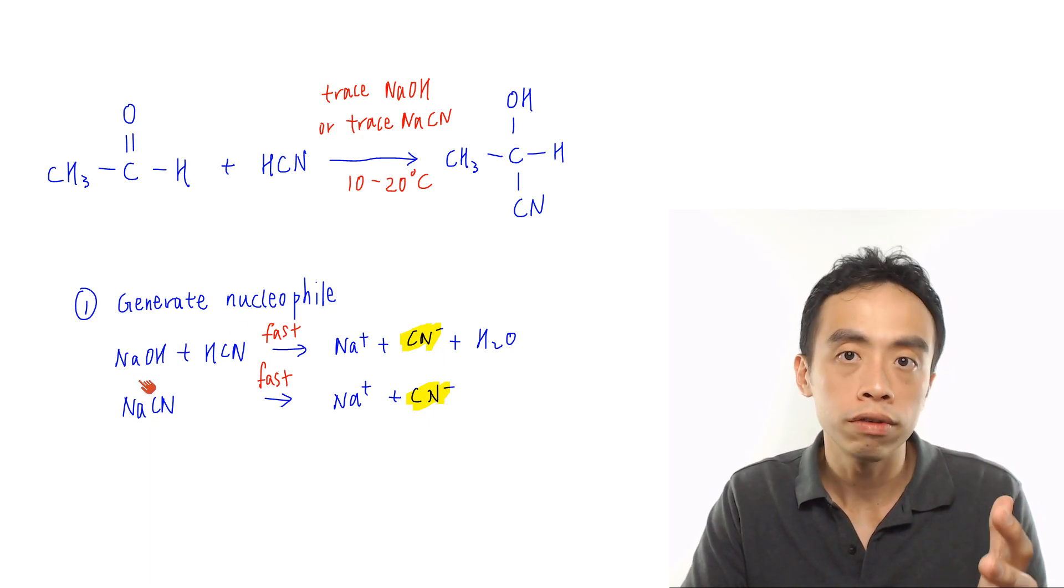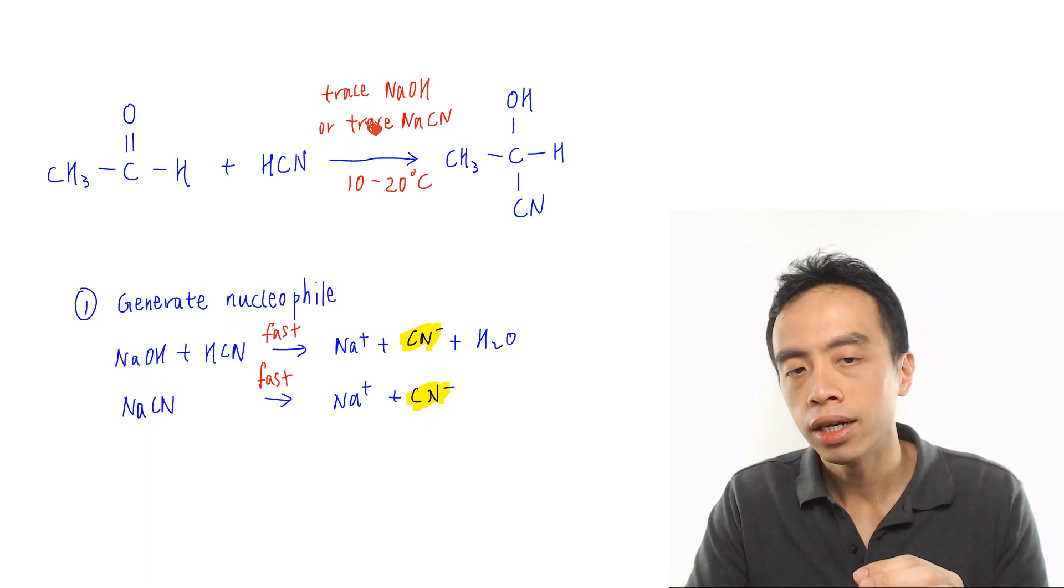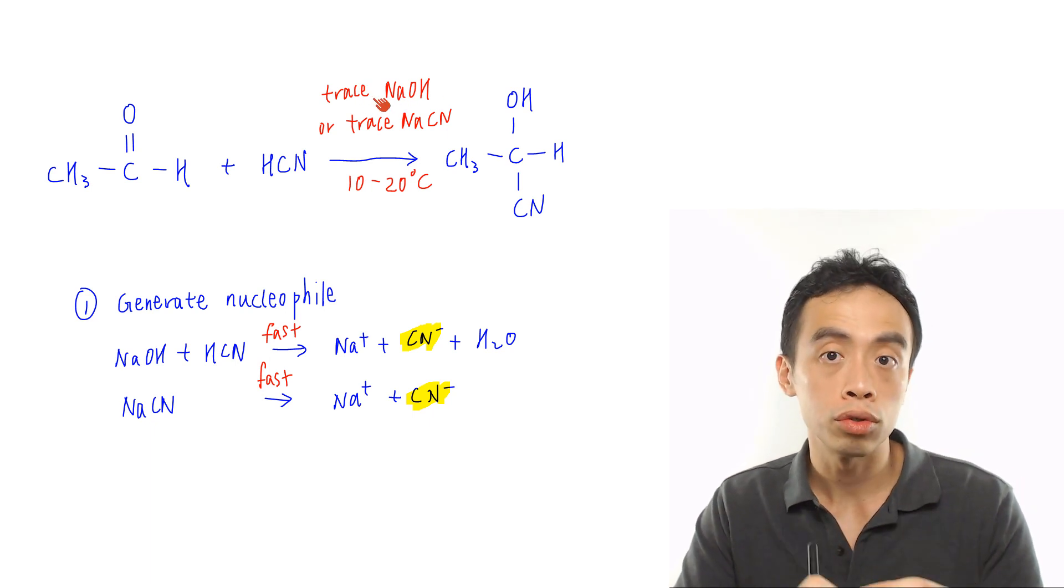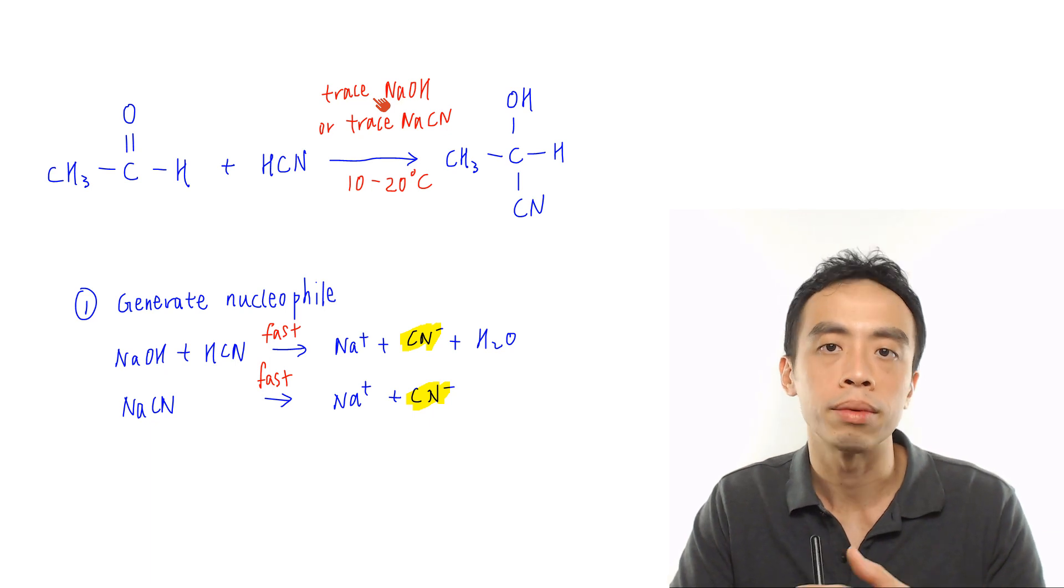NaOH is the reactant that ultimately generates this catalyst, so I don't need too much catalyst. In turn, I don't need a lot of sodium hydroxide. The amount of NaOH required will just be trace amounts because it is used to generate the catalyst.